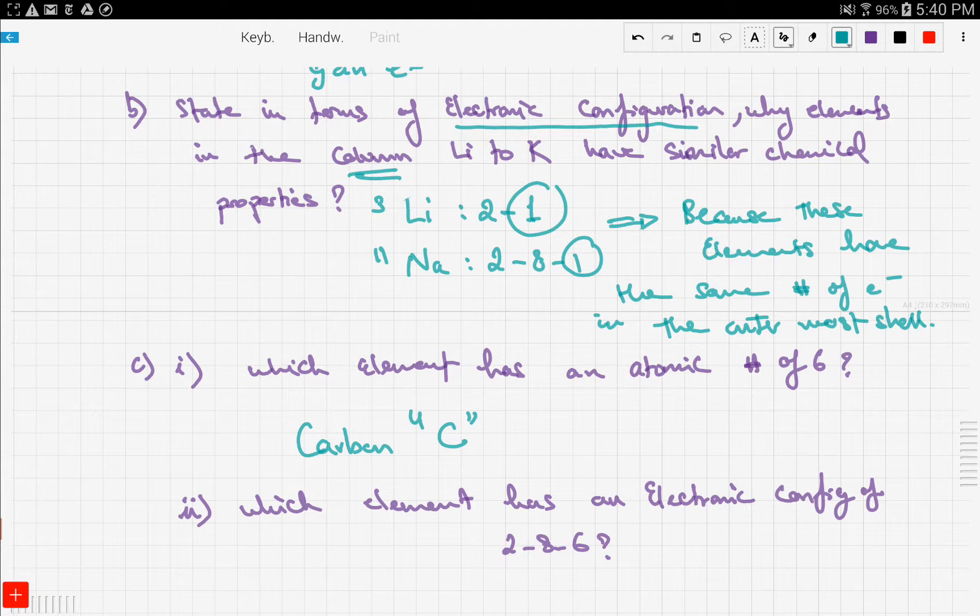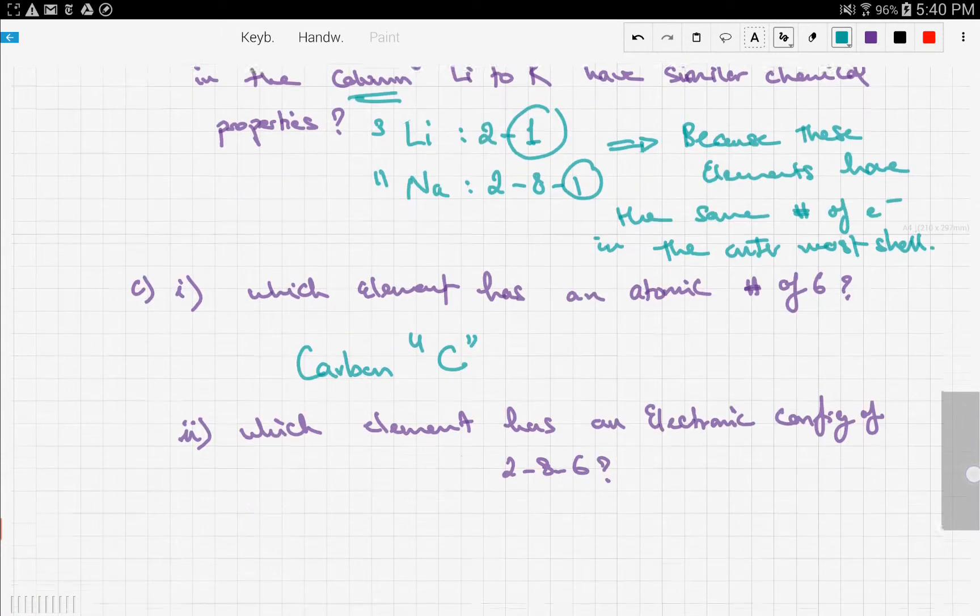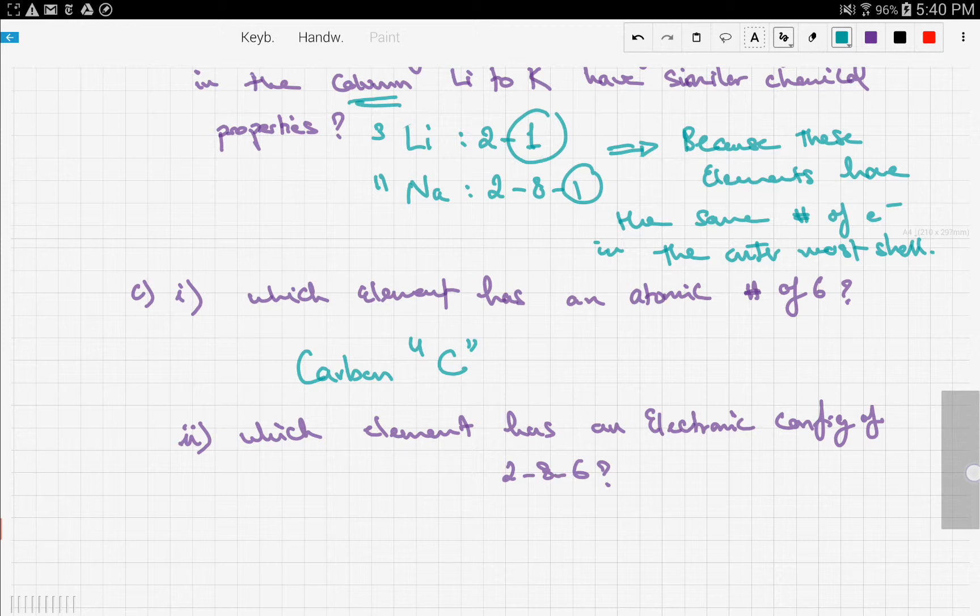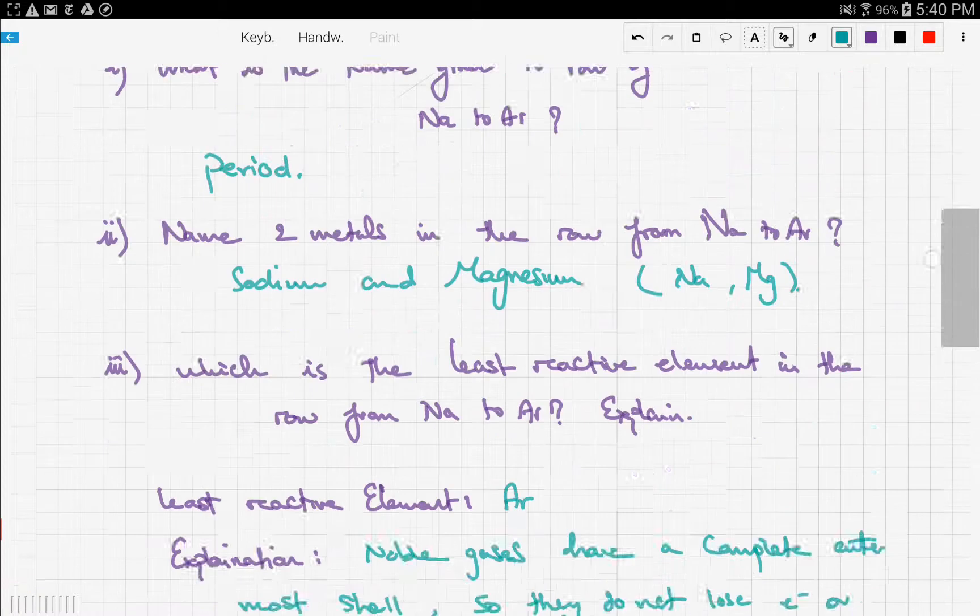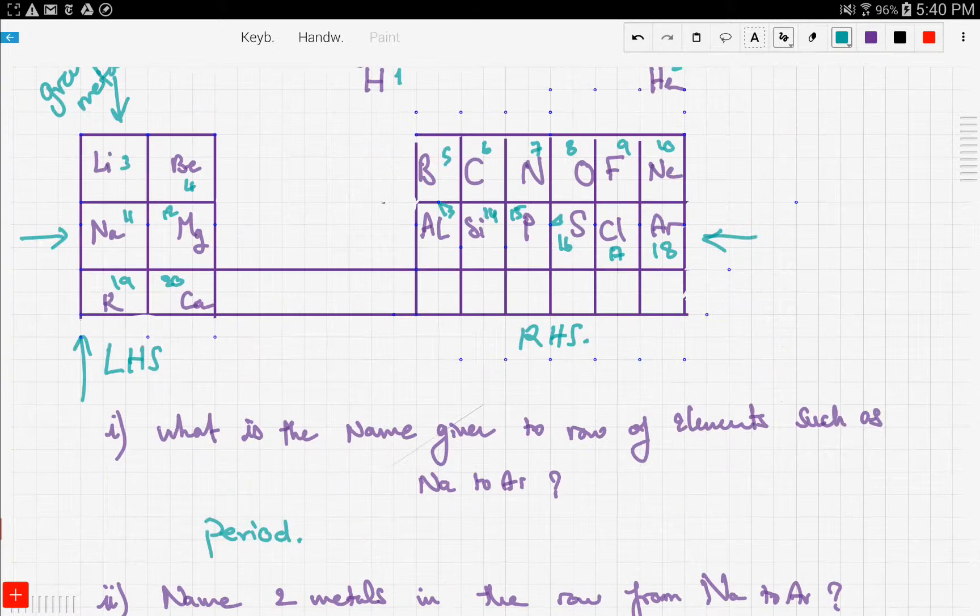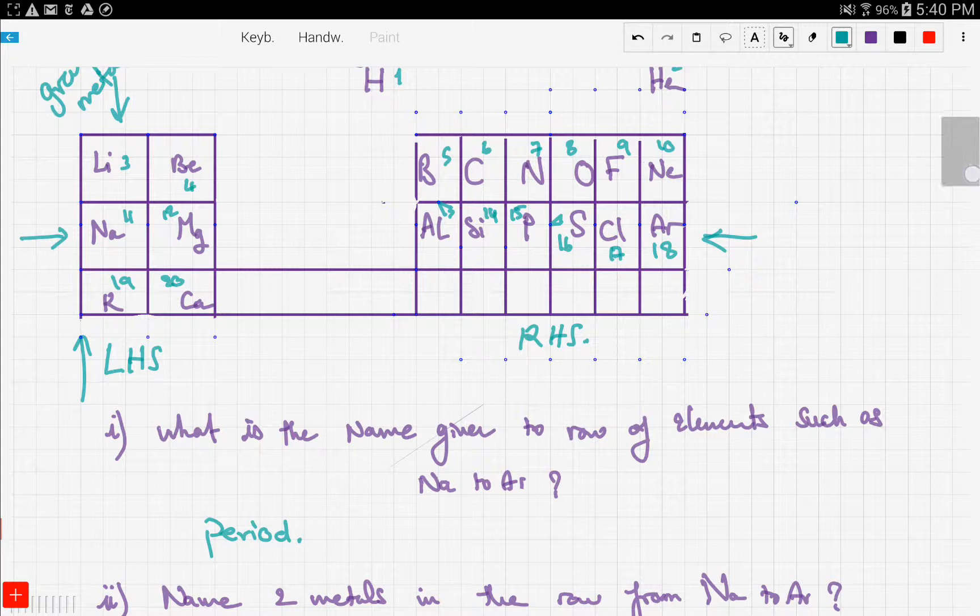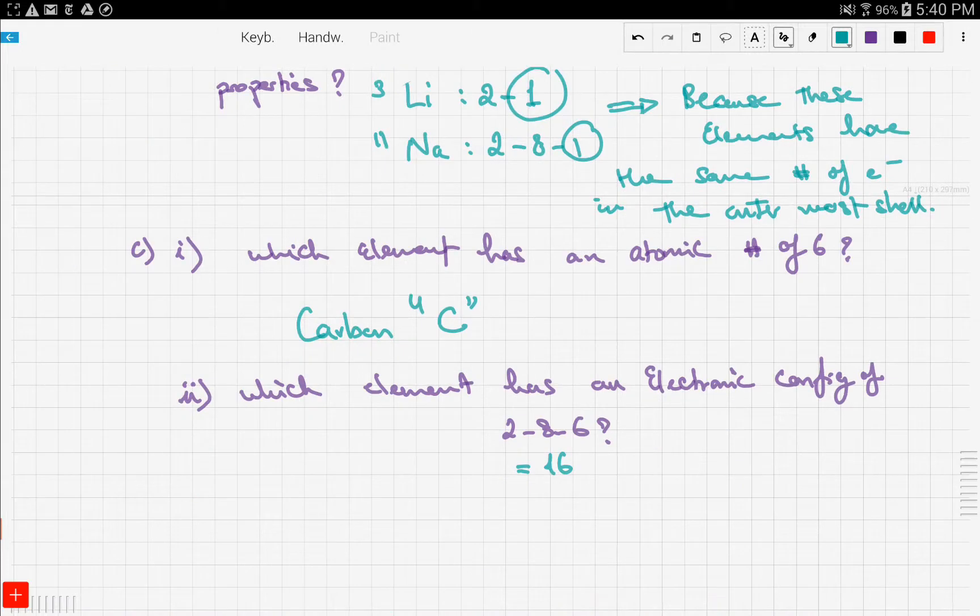Finally, which element has an electronic configuration of 2-8-6? Add these up: 2 + 8 + 6 = 16. So element number 16 is what he's asking about. That's sulfur, so you write sulfur.